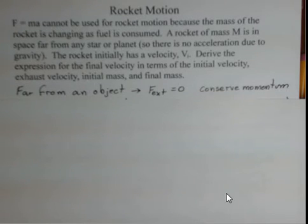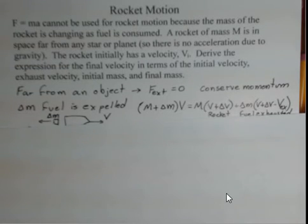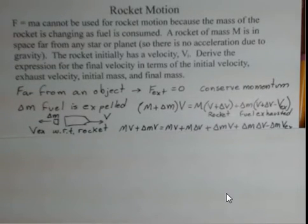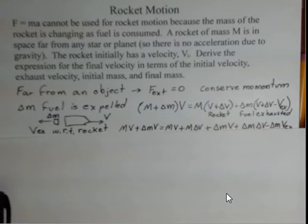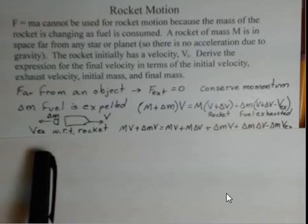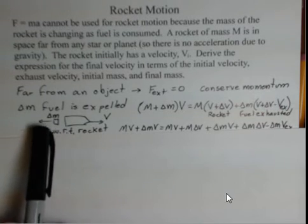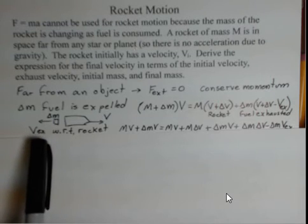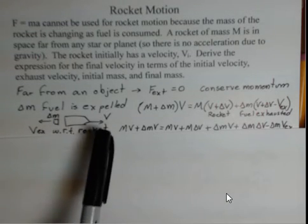There's momentum in the fuel, there's momentum in the rocket, and we're going to conserve momentum. So here's our rocket, there's some fuel coming out to the left. There's an exhaust velocity, v sub ex, an exhaust velocity for this fuel coming out. This v ex is measured with respect to the rocket. That's something to be careful of.